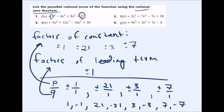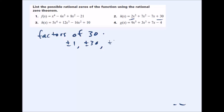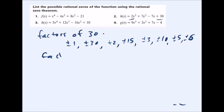Rational means these are all the possible x-intercepts that aren't decimals or imaginary numbers. This gets more complicated when the leading coefficient is not one — here it's two and the constant is 30. List the factors of 30: plus or minus 1, plus or minus 30, plus or minus 2, plus or minus 15, plus or minus 3, plus or minus 10, plus or minus 5, plus or minus 6. Then the factors of the leading term 2 are plus or minus 1 and plus or minus 2.